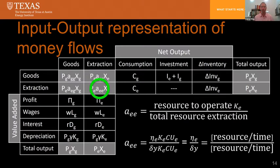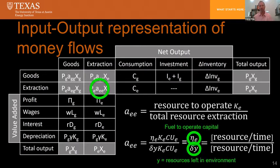Resource extraction to operate capital is one of the main feedbacks. Ada is a fuel consumption parameter divided by delta Y. As resources Y deplete, this technical coefficient increases — this is the limiting feedback. If Y goes to zero or small enough, this creates a conservation-of-flow constraint where all resources are consumed with no more way to distribute them in the economy, creating a physical constraint. We would call this a net energy feedback or energy return on investment feedback.